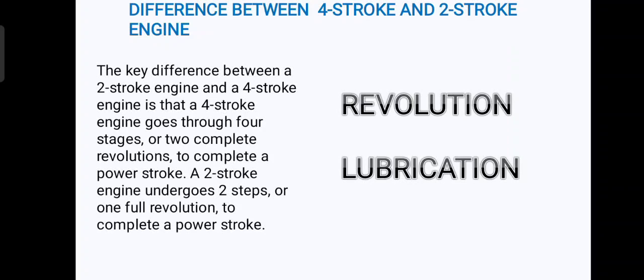Another main difference is the lubrication process. In a two-stroke engine, as mentioned earlier, the lubrication is mixed with the petrol. The air, fuel, and oil enter together into the crankcase and then pass into the combustion chamber. This means the oil is burned together in the combustion chamber, which is why you will notice the exhaust gas of a two-stroke engine.